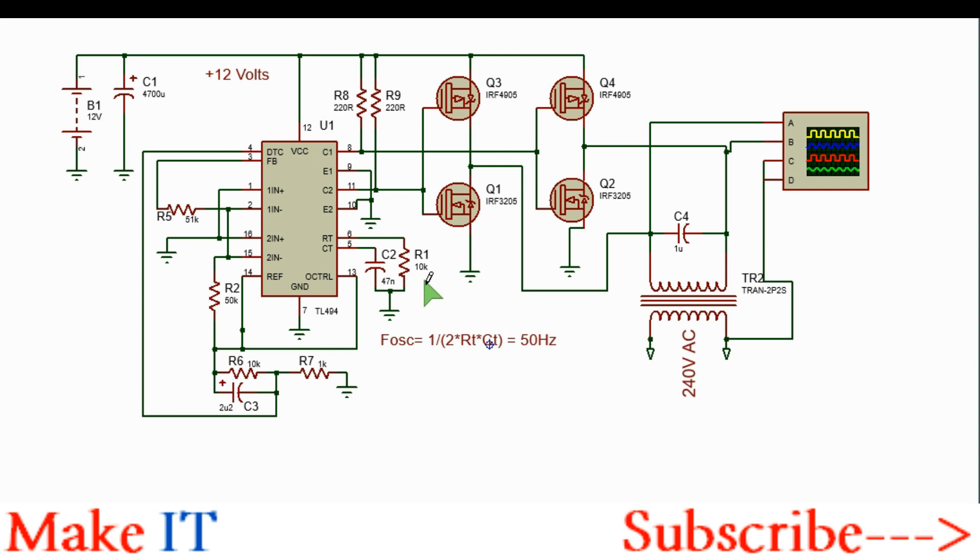For the frequency, you determine the frequency by the values of the timing capacitor C2 and timing resistor R1. The formulas are shown here. Just use R1 as 10 kilo ohms and C2 as 47 nanofarads.